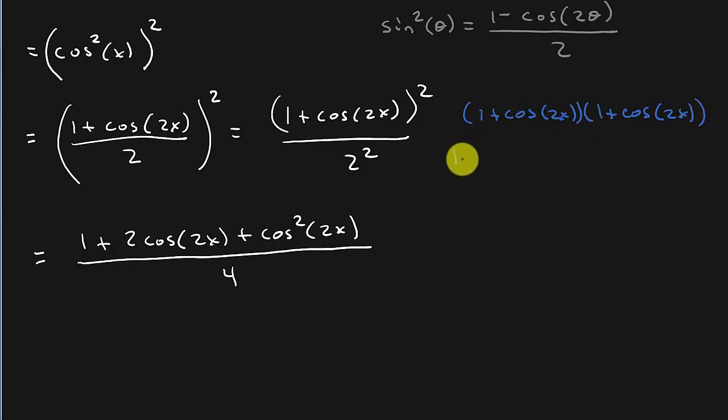And then we've got 1 times cosine 2x plus 1 times cosine 2x. So that's cosine 2x plus cosine 2x is 2 cosine 2x. And then cosine 2x times cosine 2x is cosine squared 2x, all right?